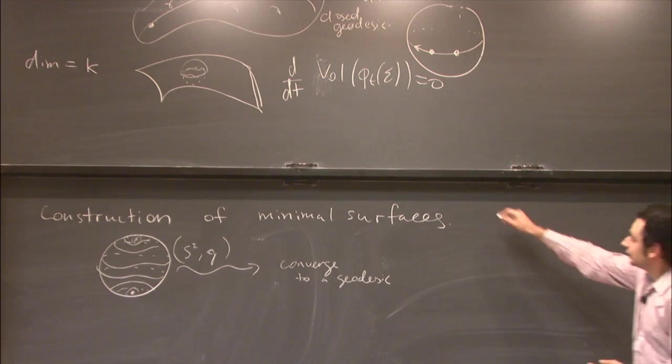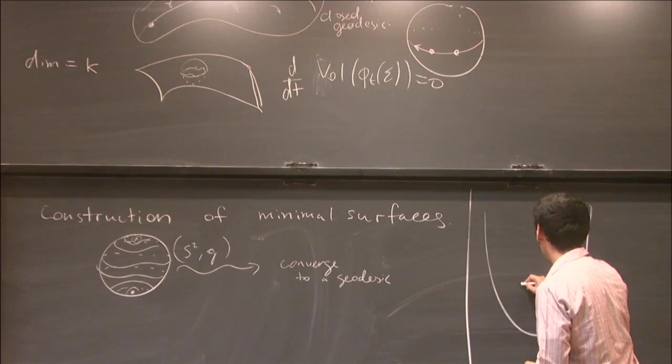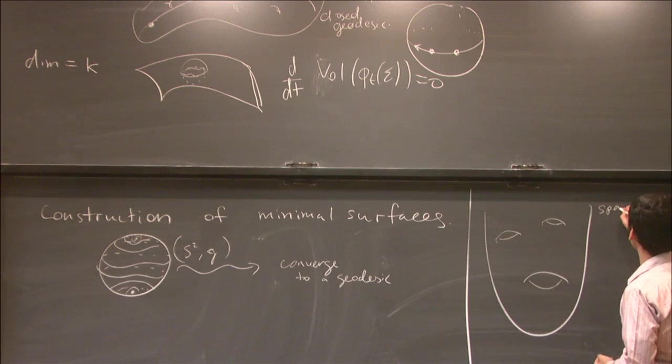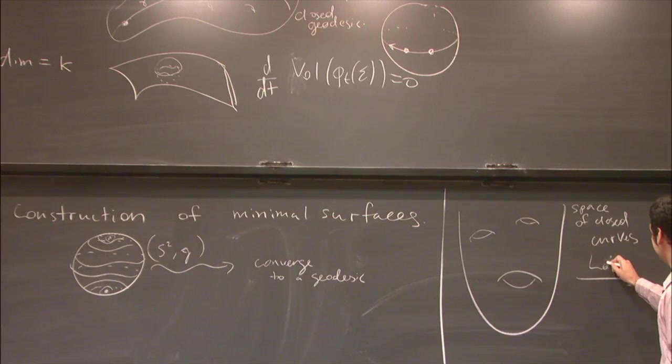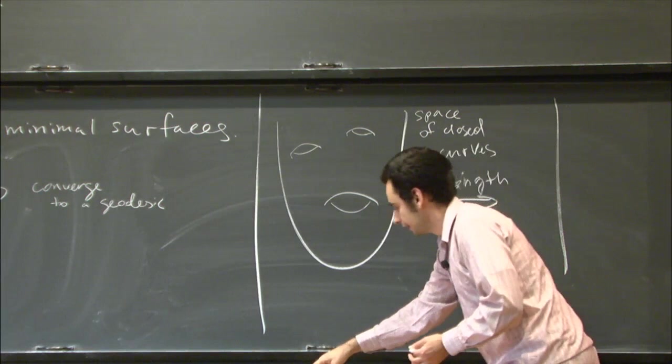There is a different way of seeing this picture. Imagine that we are looking at the space of closed curves, and we have a function defined on that space which will be length, and we will picture it like a height function.